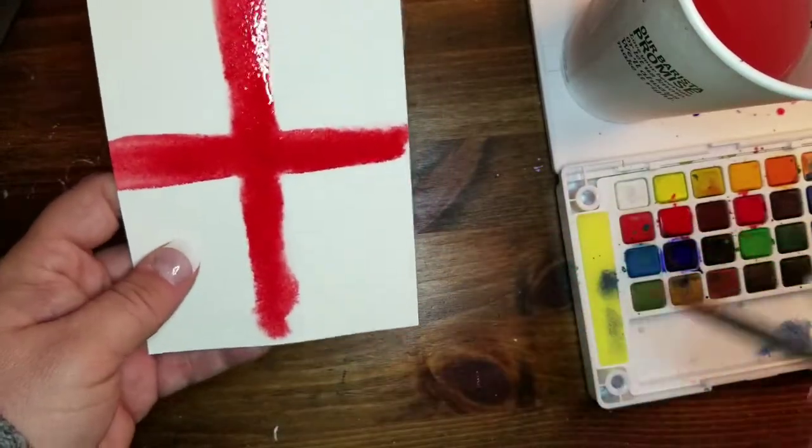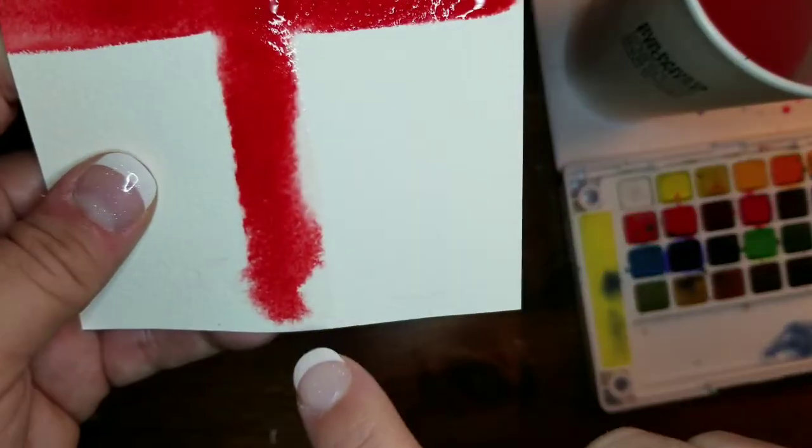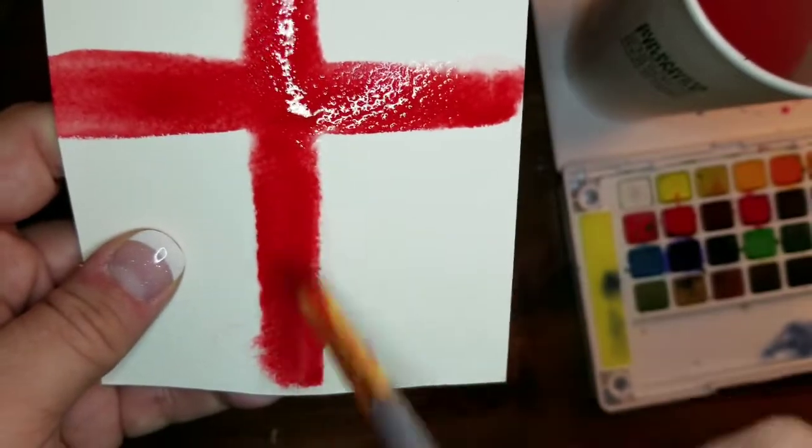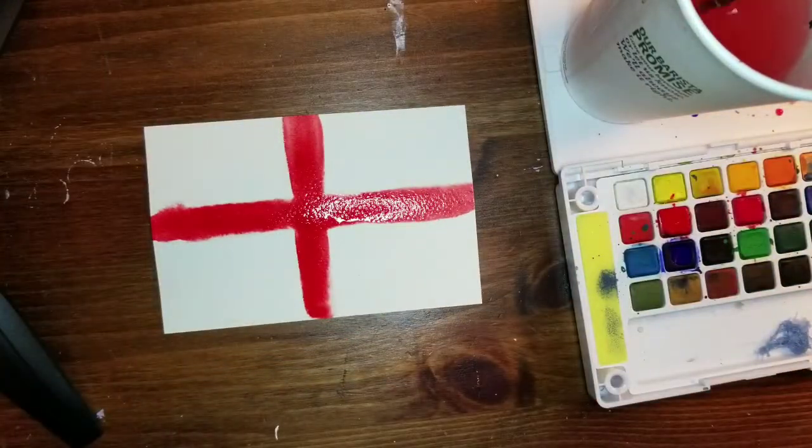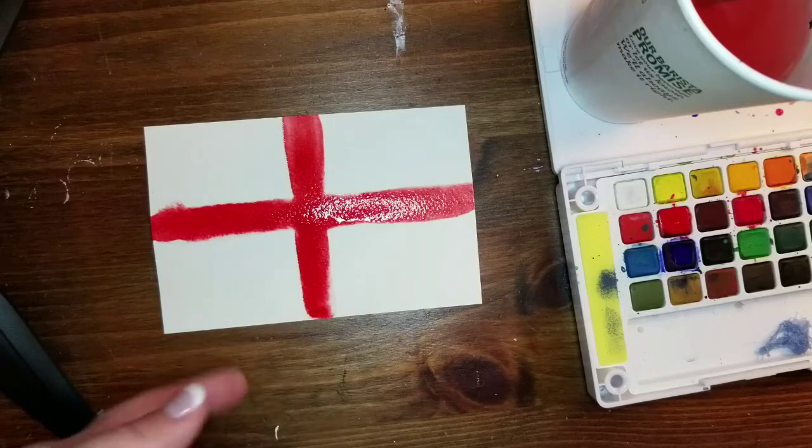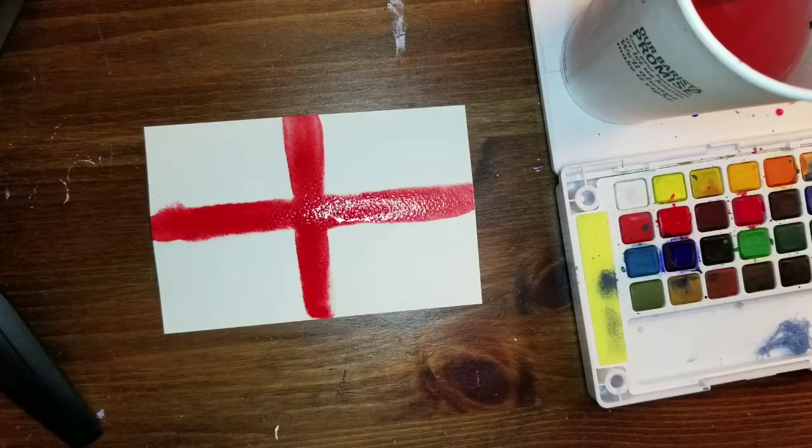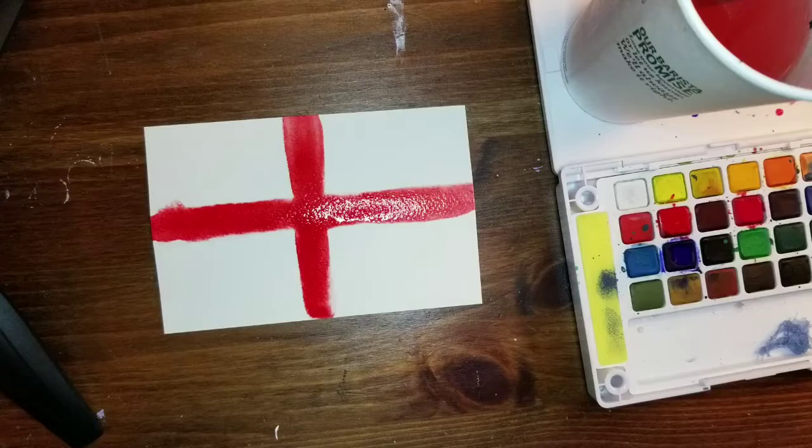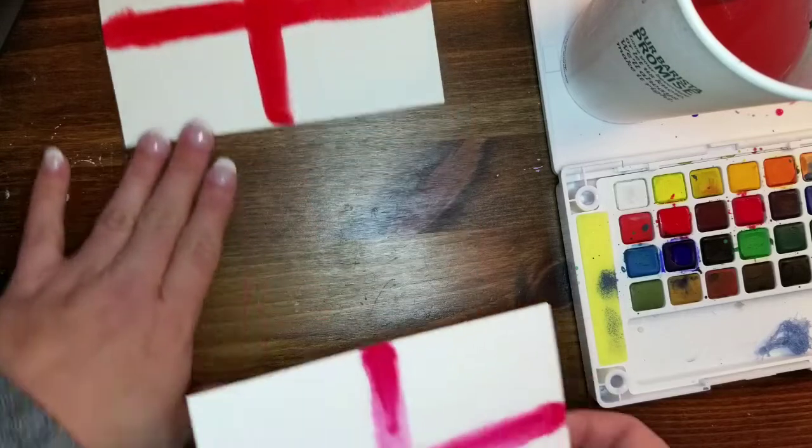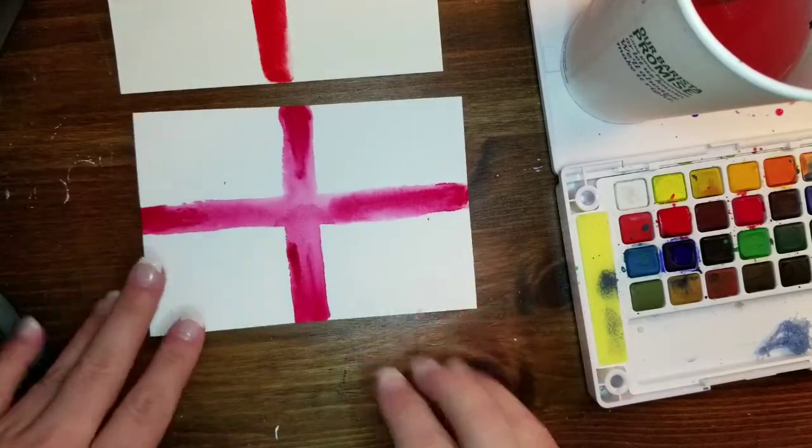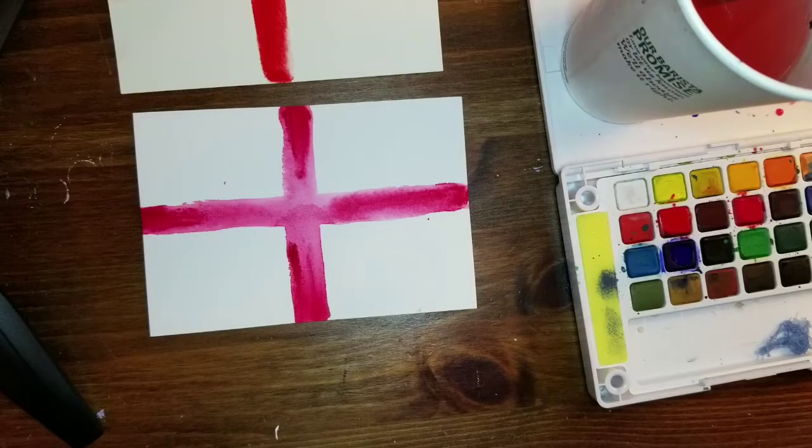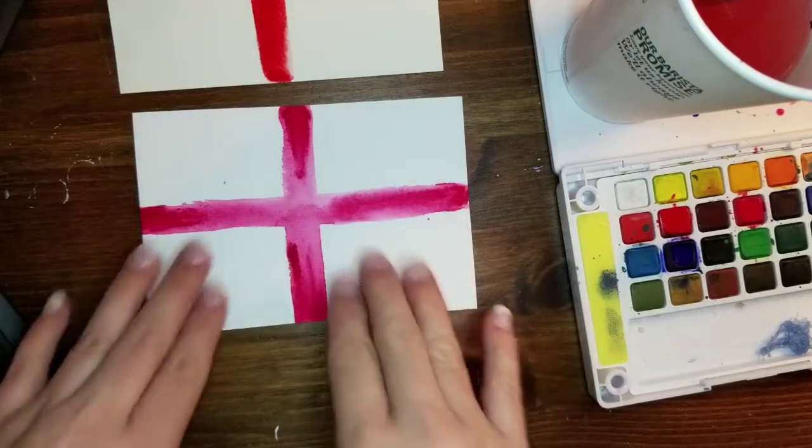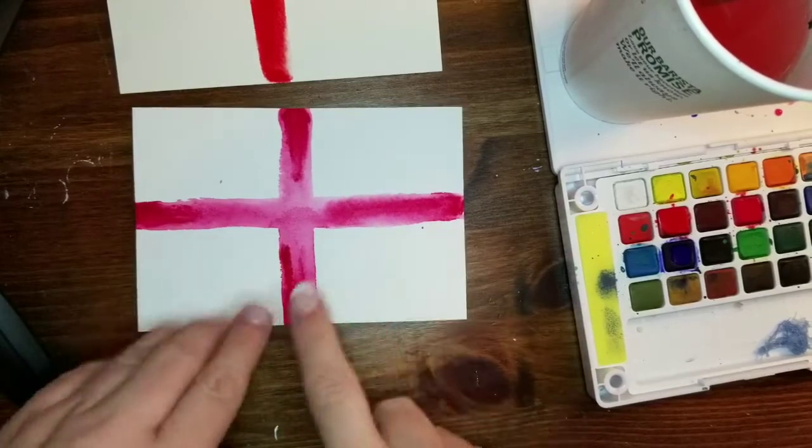You can leave it kind of watercolory if you want to or you can fill it in. So that's step one to making the British flag in watercolors. I had actually been planning to do this, so I have one that is dry. Then the next step, you do want to let it dry because you don't want the watercolor to bleed.